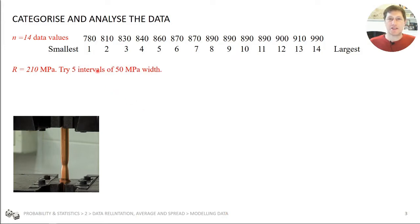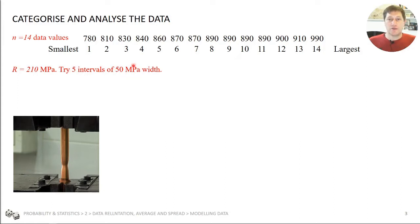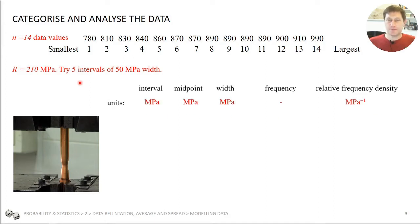So let's do that for our data set. This is our data, ordered from smallest to largest. The range was 210 MPa. We need to pick some intervals — with a range of 210 and only 14 data points, let's try five intervals, so about three measurements on average per interval. Five intervals of 50 MPa nicely spans the total range. We create a table with the interval, its midpoint, its width, the frequency, and then calculate the relative frequency density.